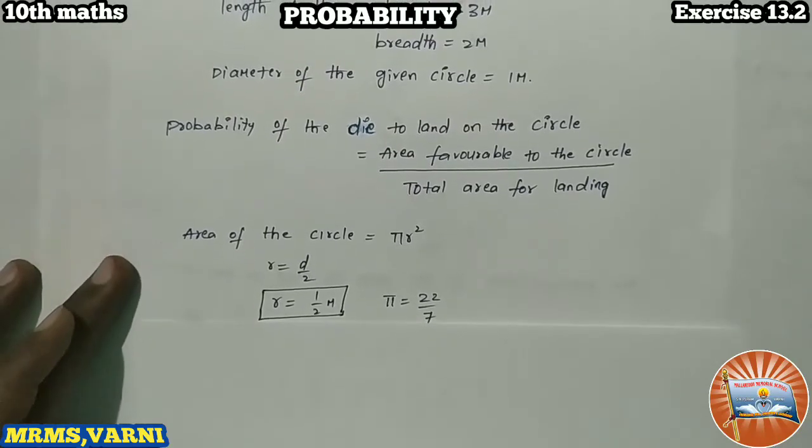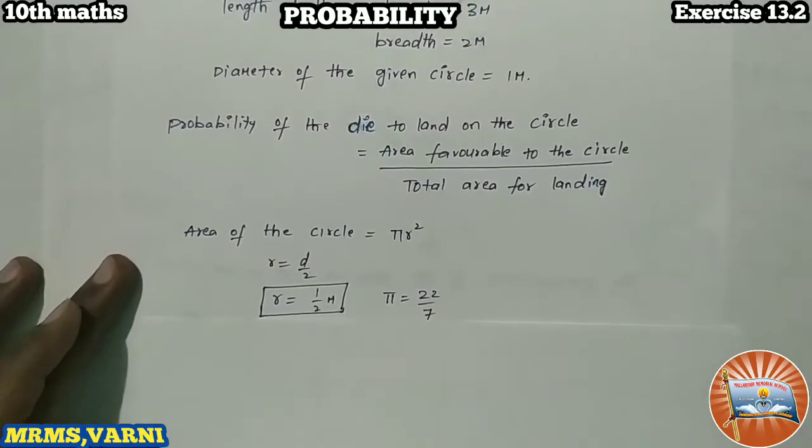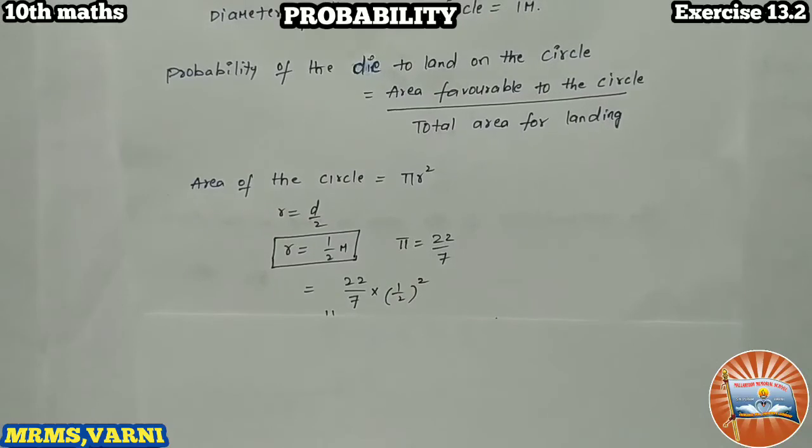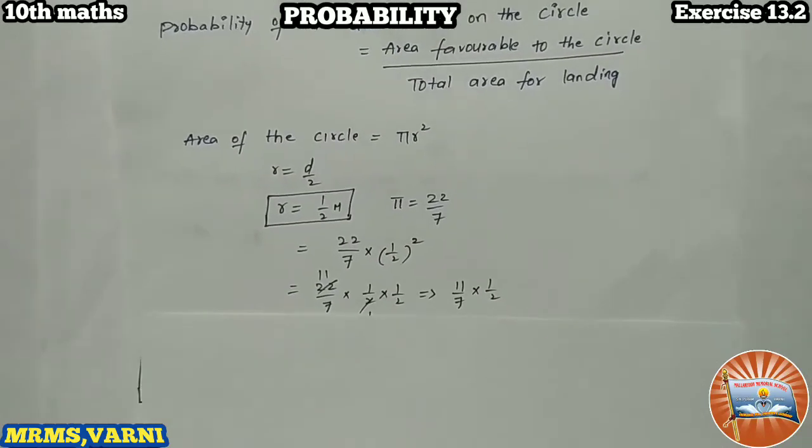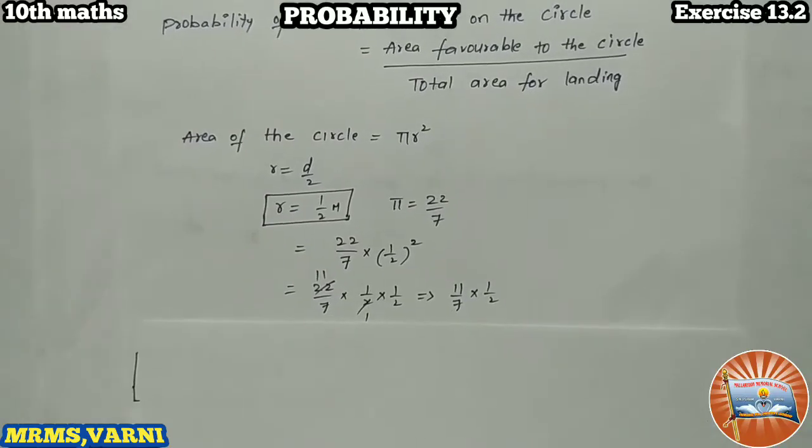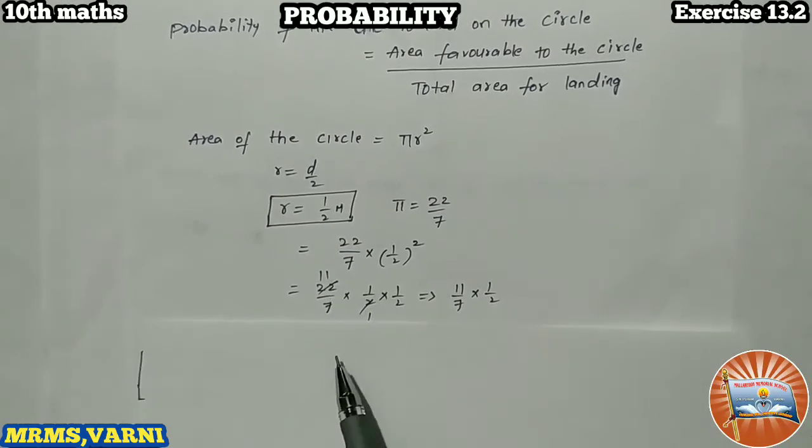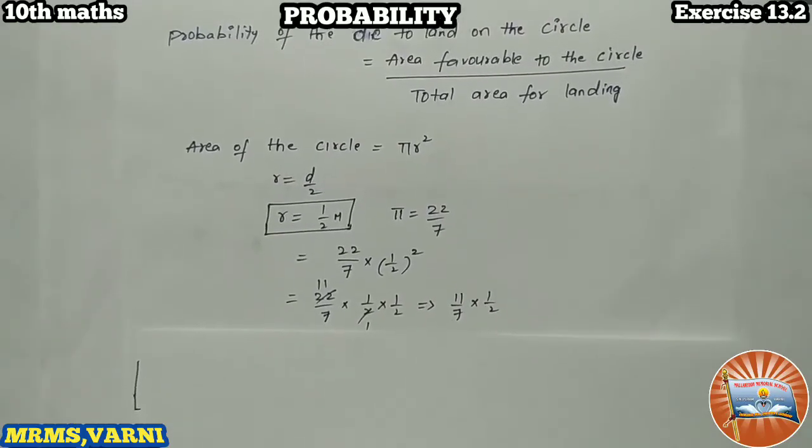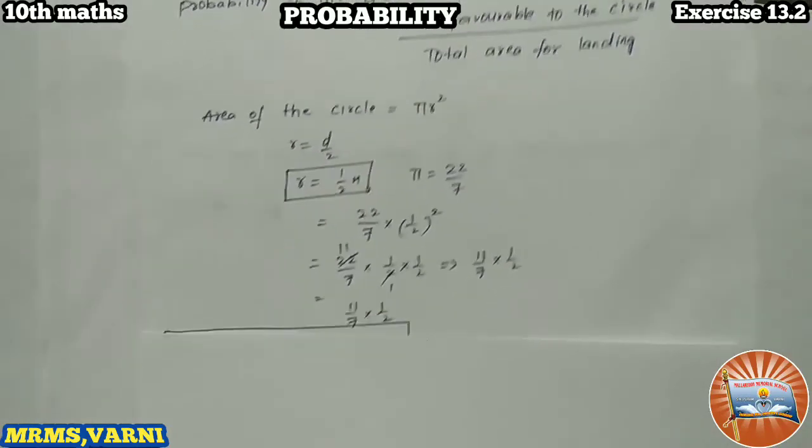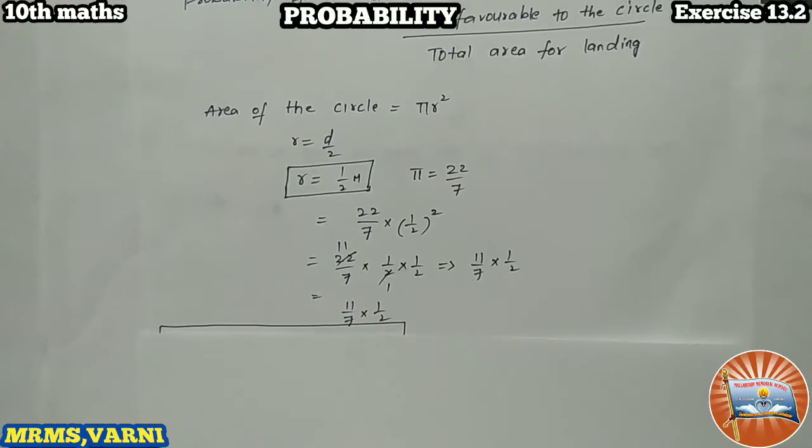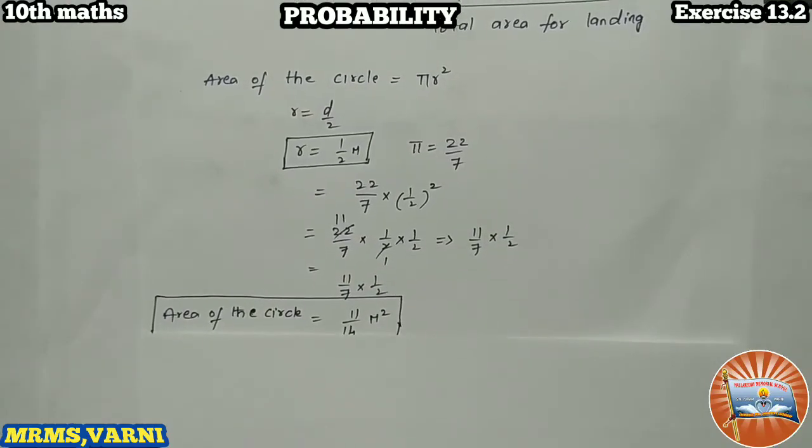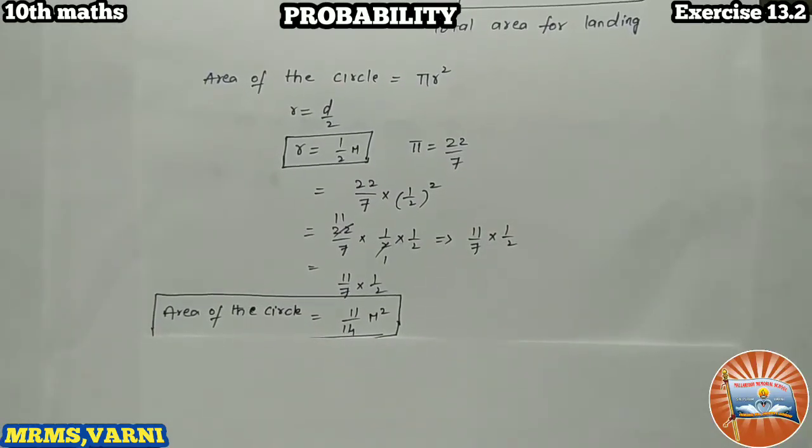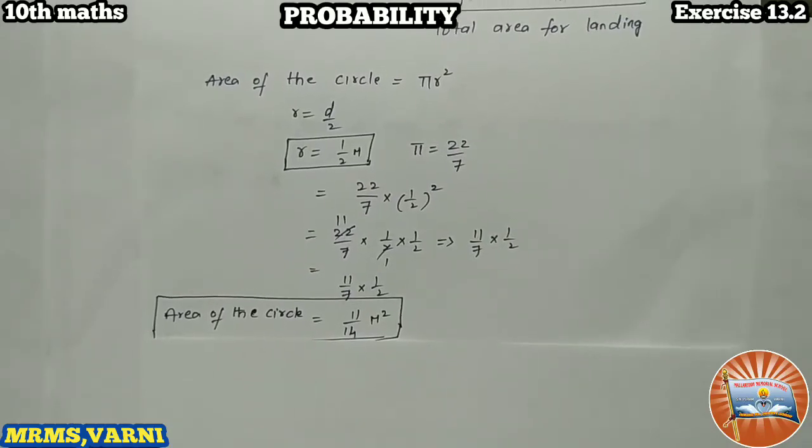Pi value is 22 by 7. Substitute the values in the formula: that becomes 22 by 7 times (1 by 2) squared. This we can write as 22 by 7 times 1 by 2 times 1 by 2. That equals 11 by 7 times 1 by 2, which becomes 11 by 14 meter squared is the area of the circle. This is our favorable area.